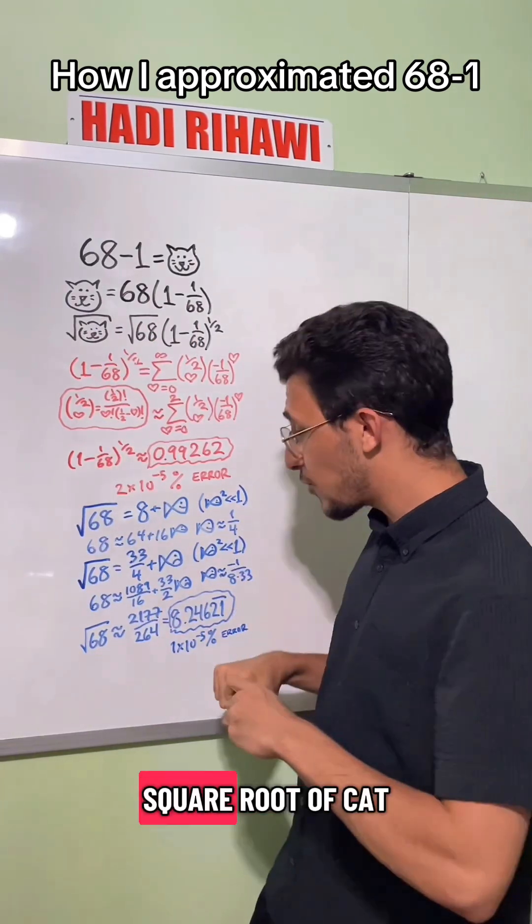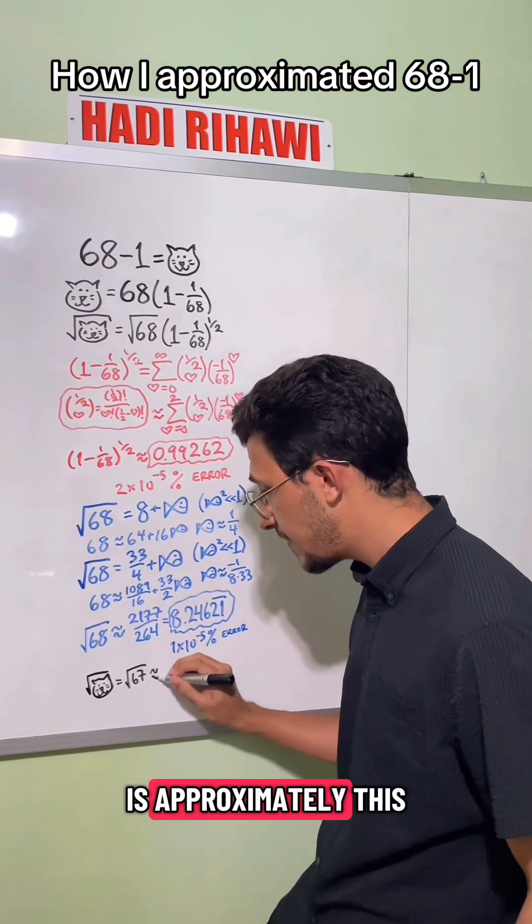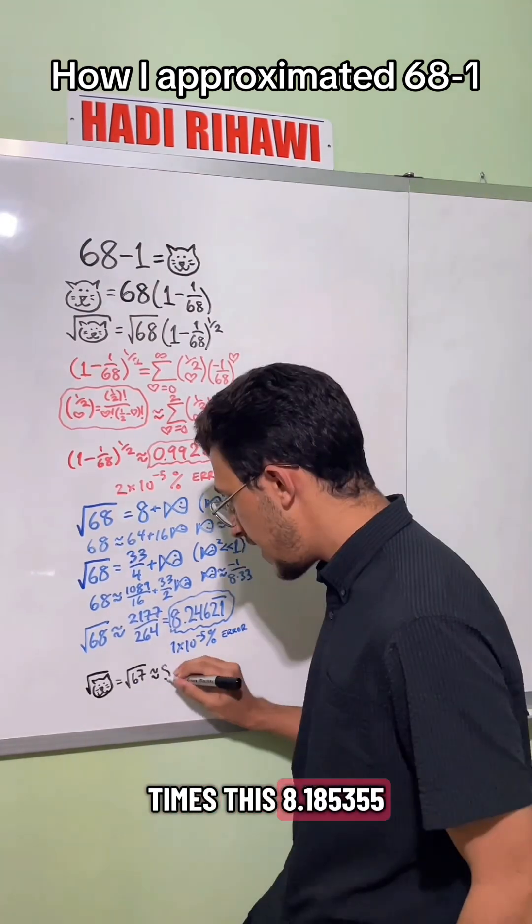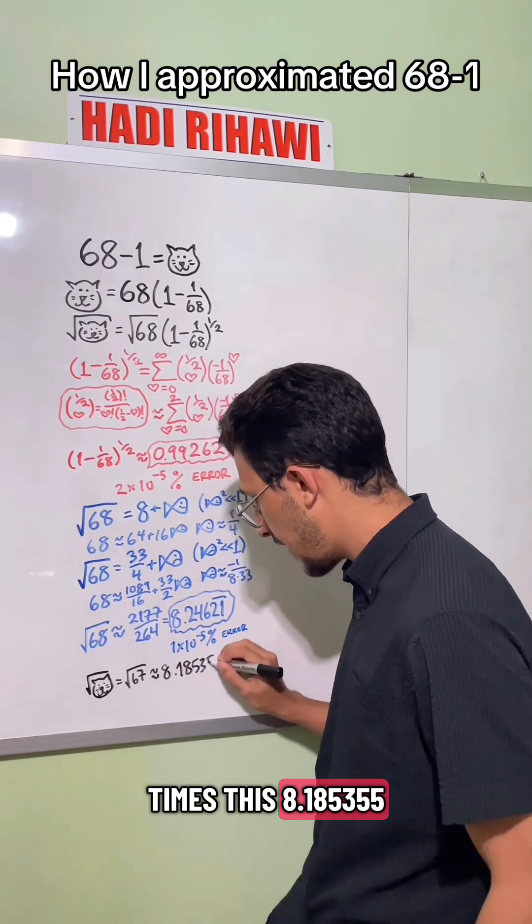So multiplying these two together gives us that the square root of cat, or the square root of 67, is approximately this times this, 8.185355.